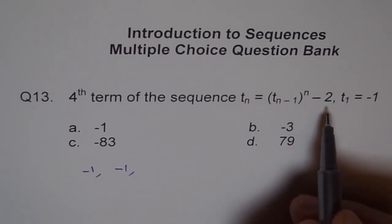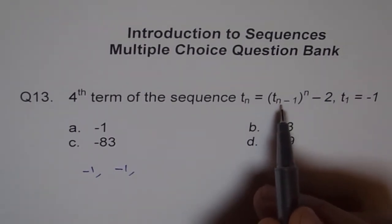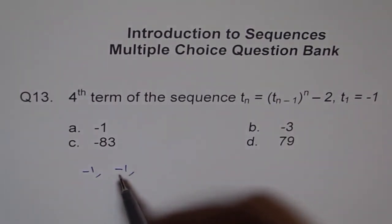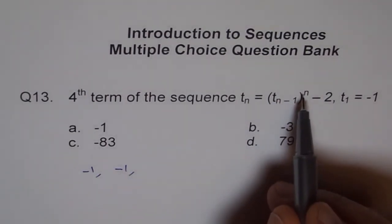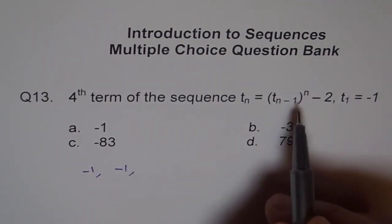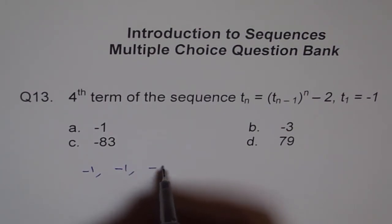For the third term, if I put 3, then 3-1 is the second term, which is -1. (-1)^3 will be -1. So -1 - 2 will give me -3.